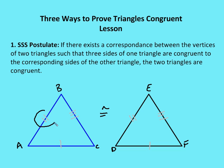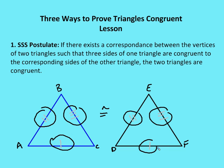In this case, I have AB congruent to DE, noted by the tick marks. I have BC congruent to EF, and AC congruent to DF. So if all three sides are congruent between the two corresponding triangles, the triangles are congruent. You can try this out — take some toothpicks and break them into three pieces, make two sets of equal lengths, and you'll see that regardless of what you create, you'll end up with two congruent triangles.